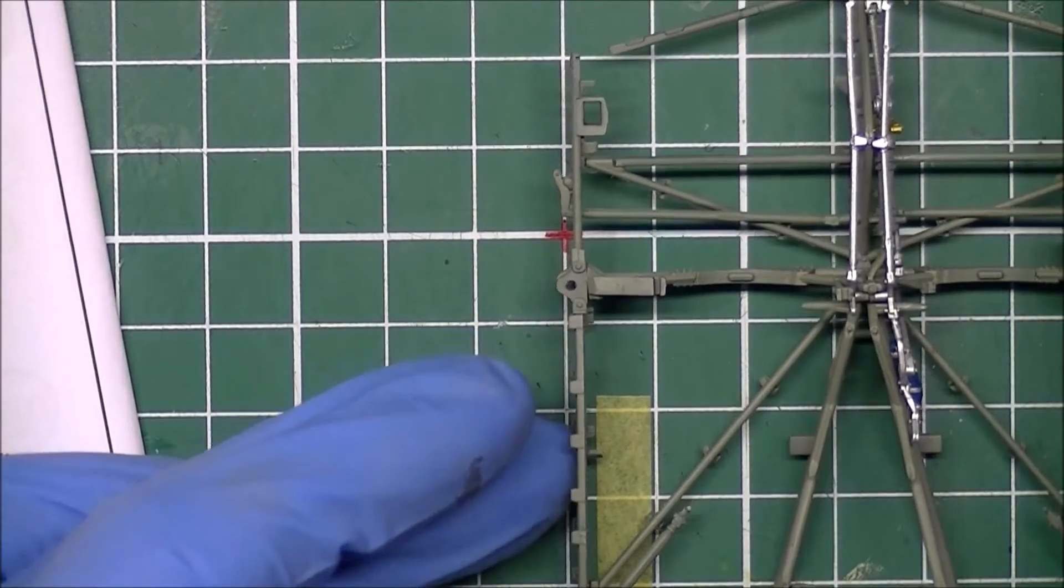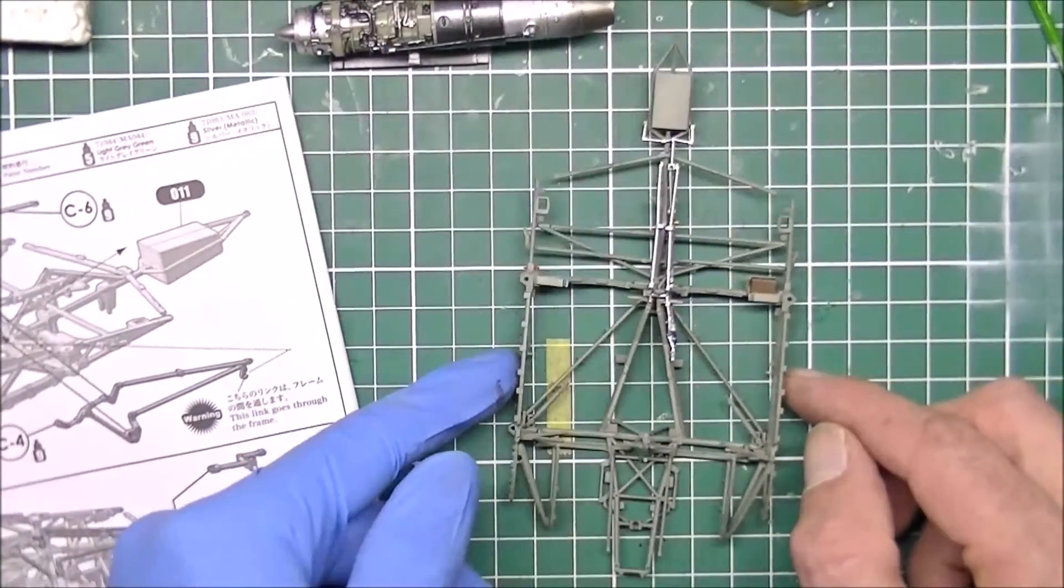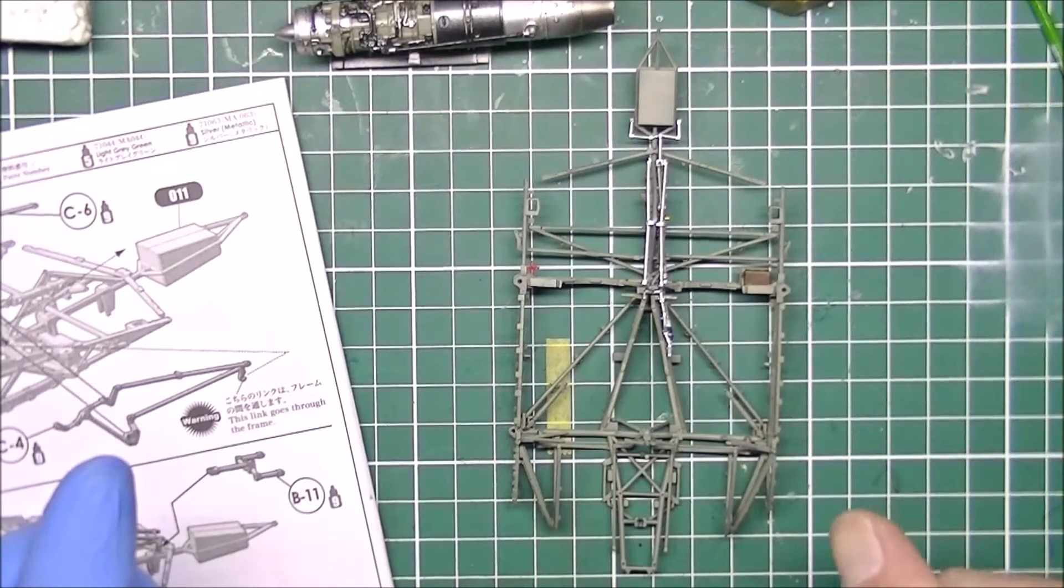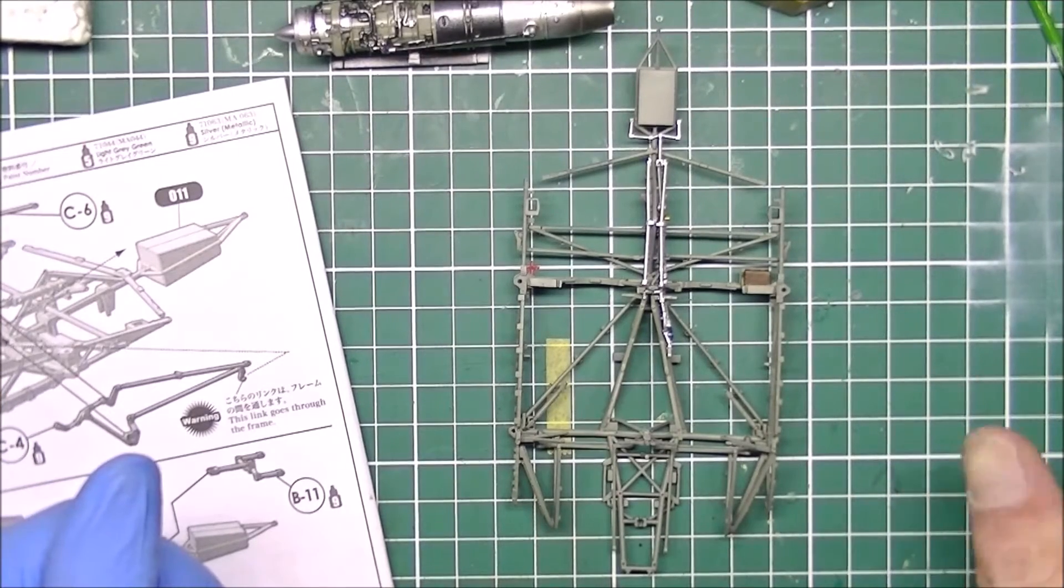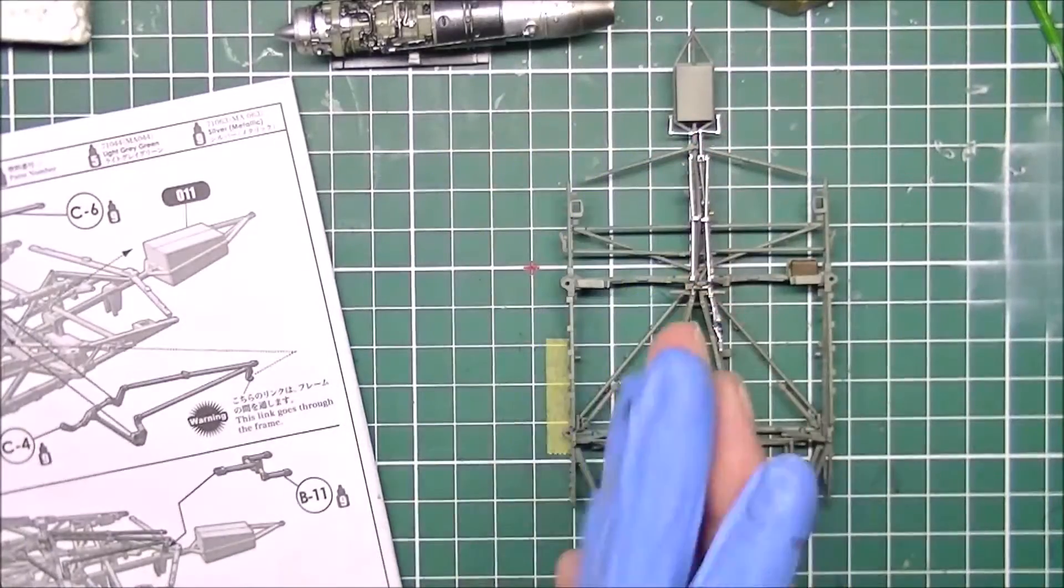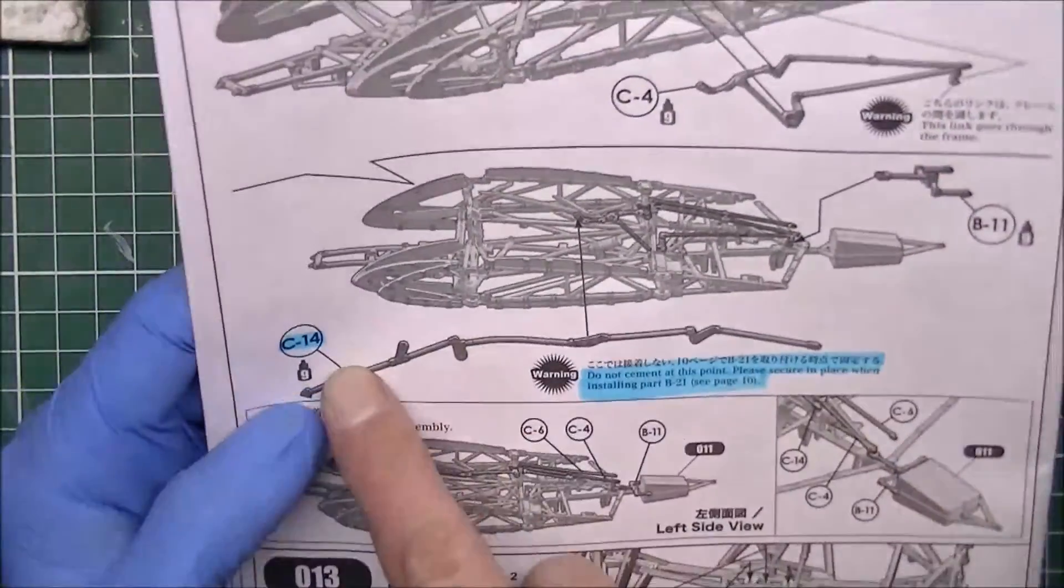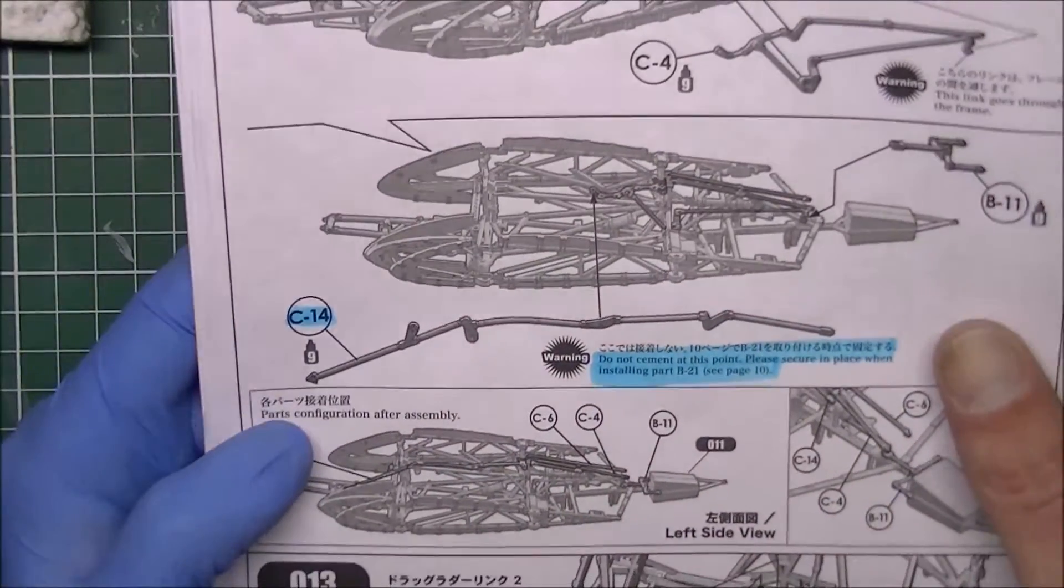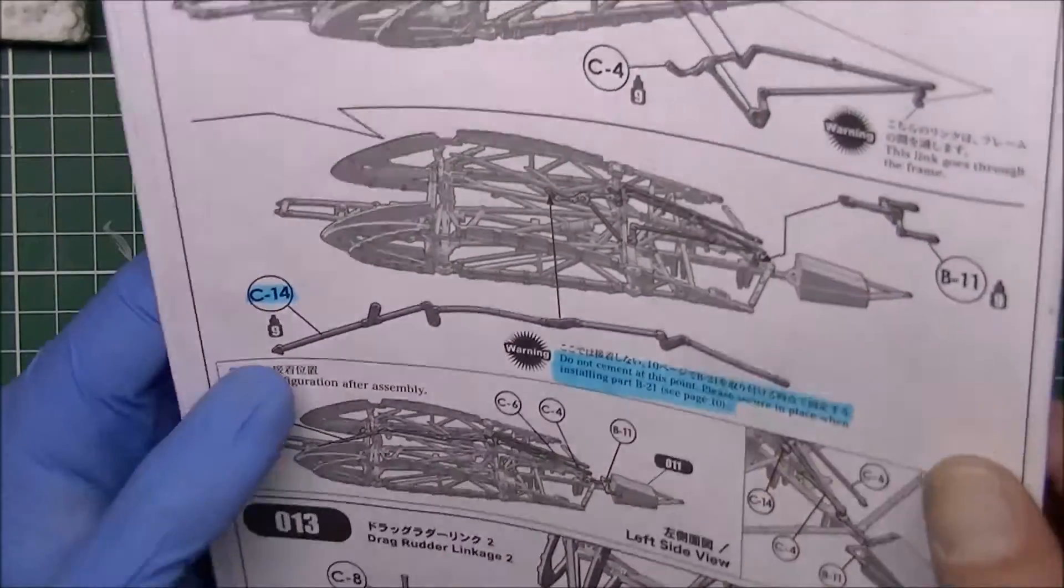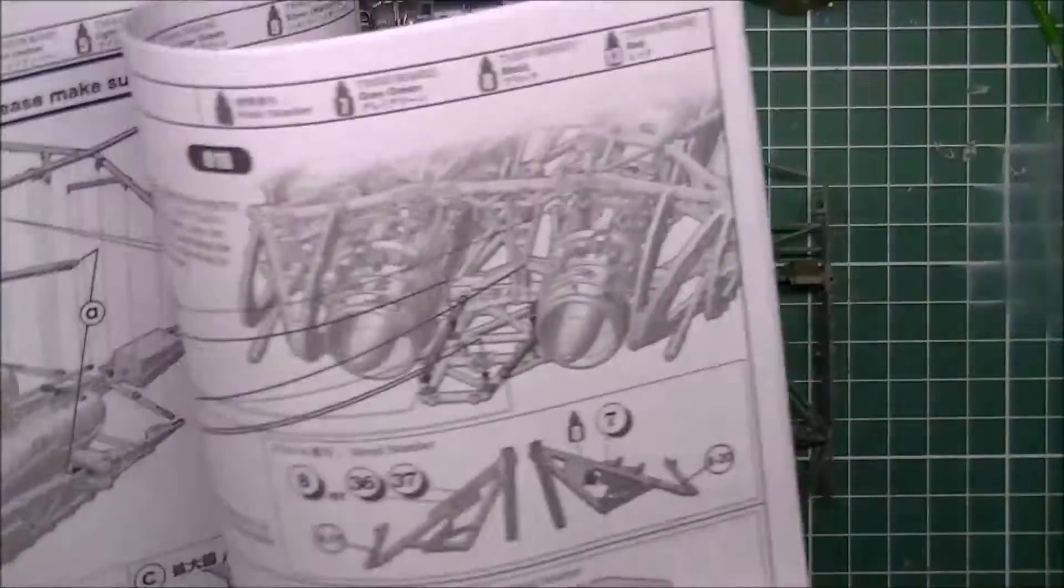But I think it's nice, it's something different for a change. Usually every aircraft is just paint the cockpit, slap the two fuselage halves together and you're done basically, unless you get the very big ones like Spitfires and stuff with all the radio bits in there. There's also a correction in the instructions sheet - this part I think originally they put it in here at first but you have to attach it to parts that go in the frame later.